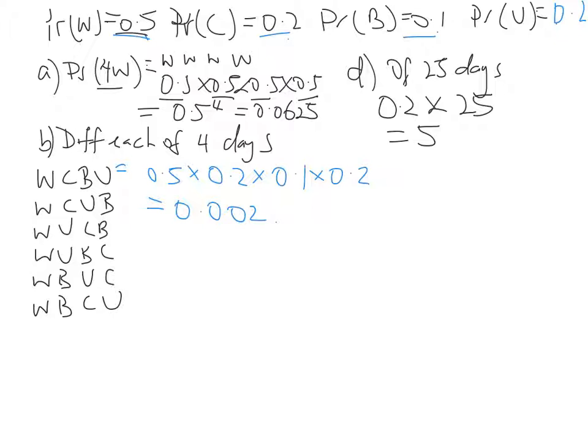Now where this becomes interesting is that for any of these to happen, it's 0.002. But how many ways can we have this happening in total? Well here we've got 6. Now that happens if we've got one of our options, one of our 4 options, starting off, we end up with 6.